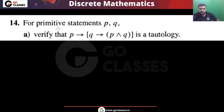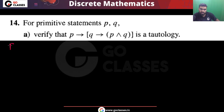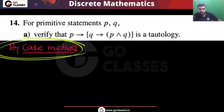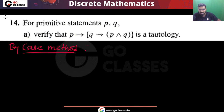Let's look at this question one by one. We can solve it using the by-case method, which is the most efficient method. P and Q are propositional variables, so they are either true or false. Only two cases are possible.